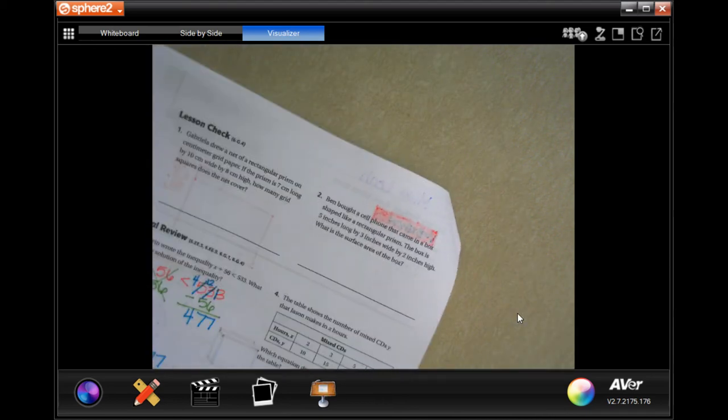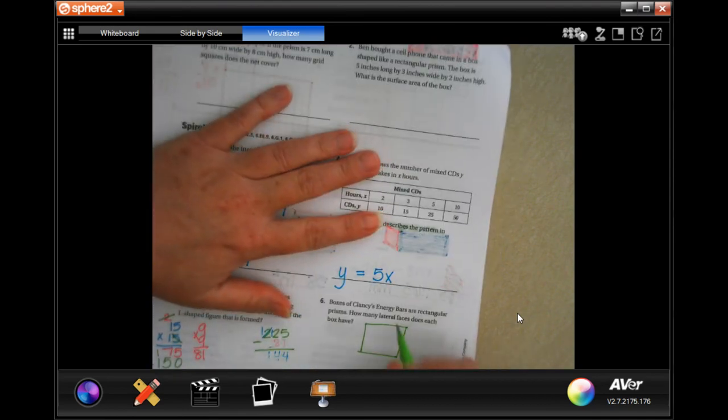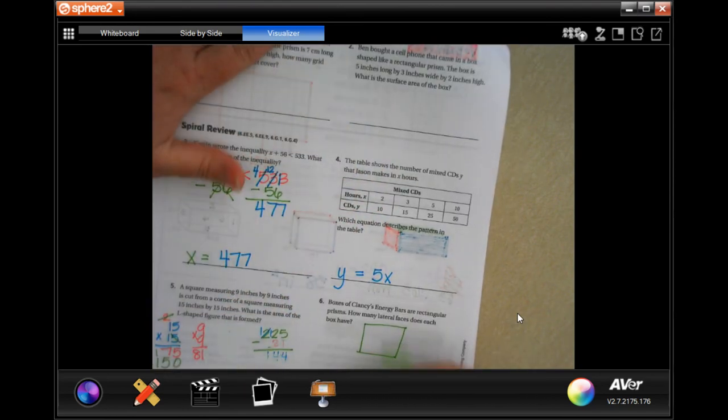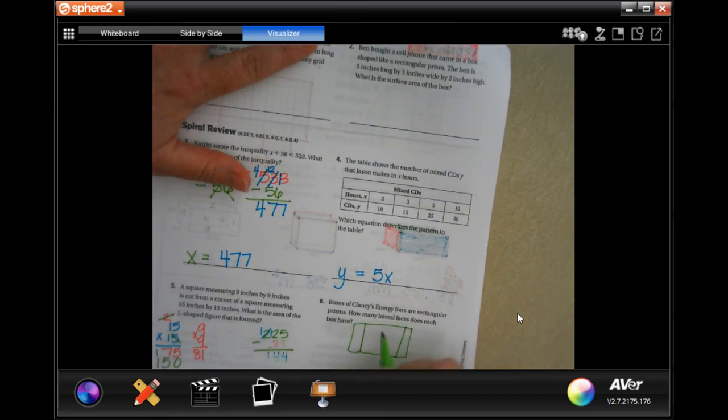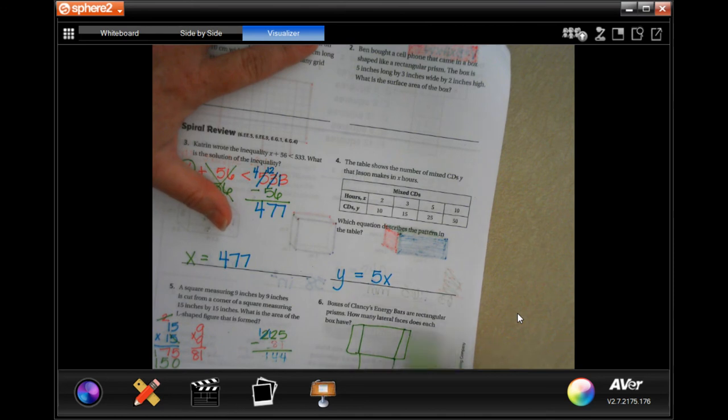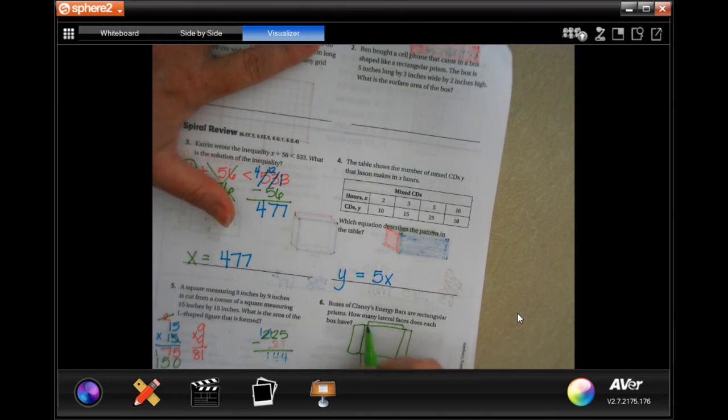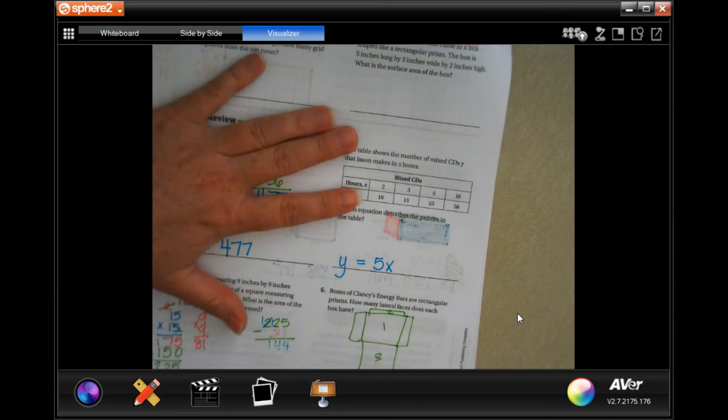But, lateral, there's only 4 of them. Sorry, I'm trying to make it so that y'all can see this. So, lateral. 1, 2, 3, 4. There are 4.